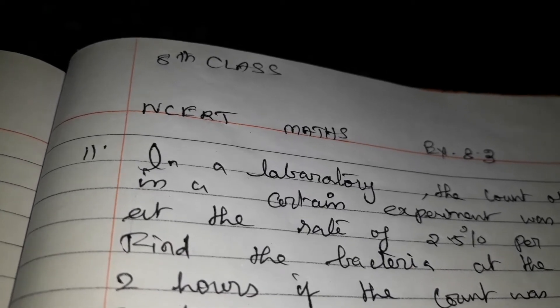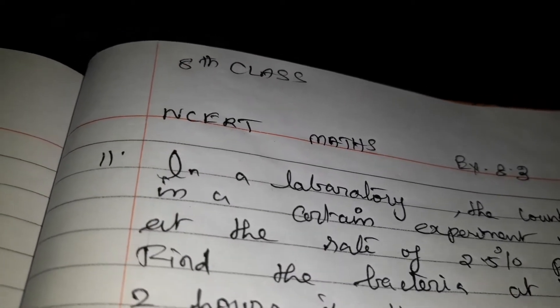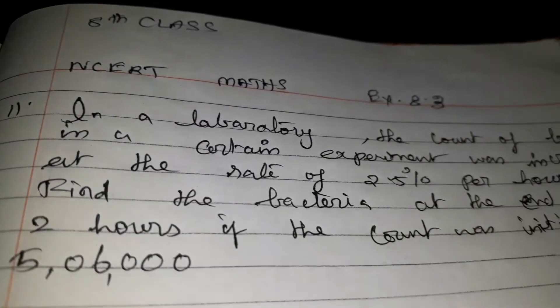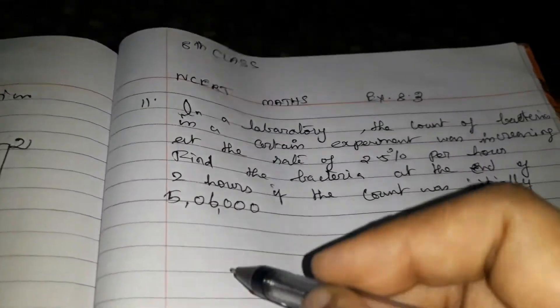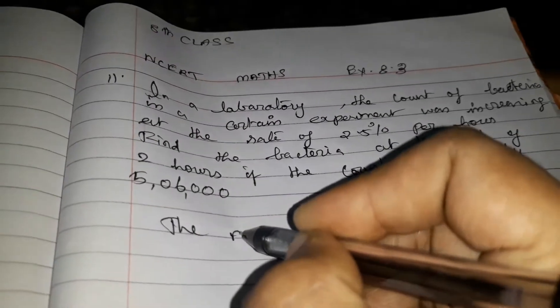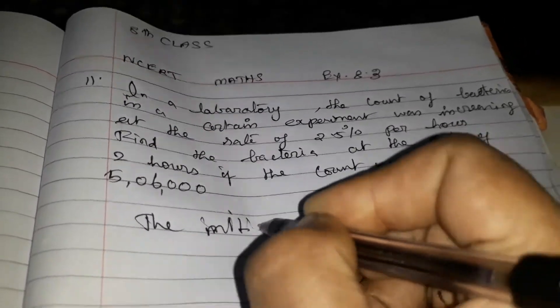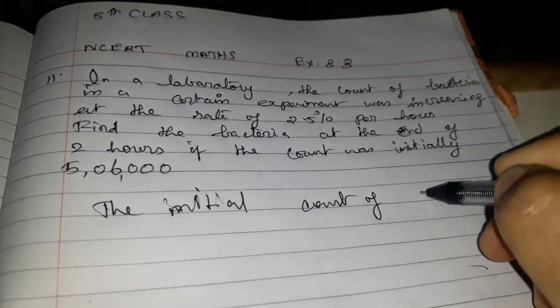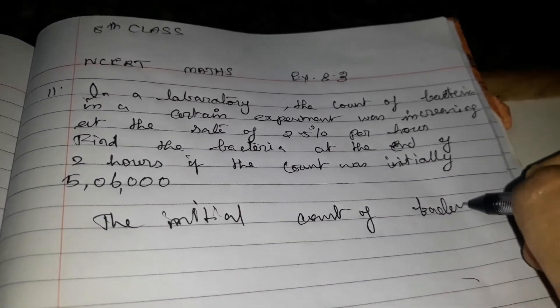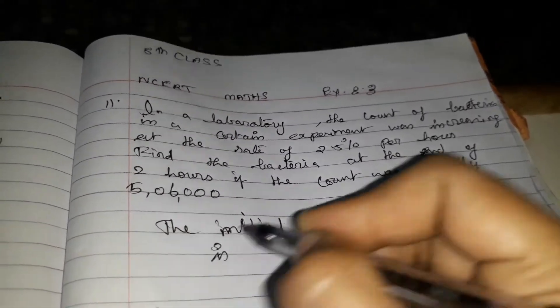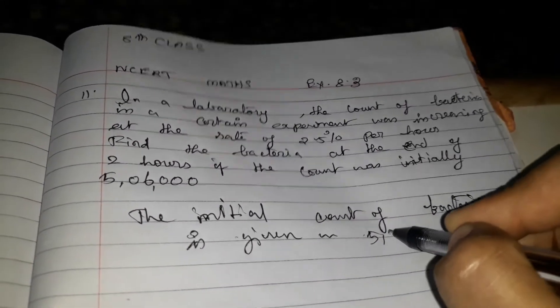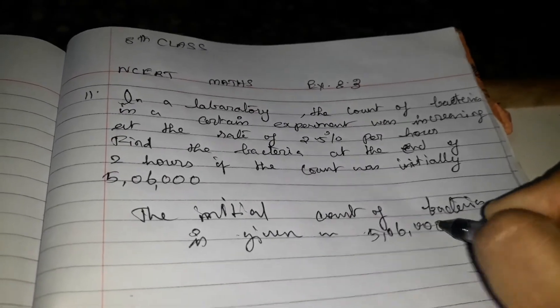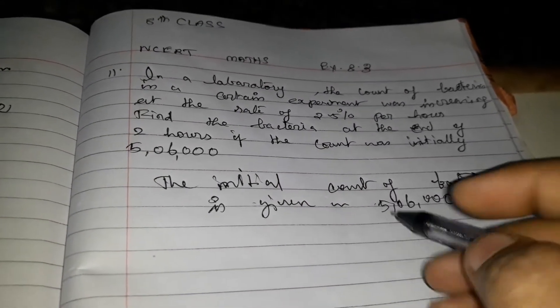In 2 hours, the bacteria level increased. That's how we calculate. The initial count of bacteria is given as 56,000. The initial level is there.